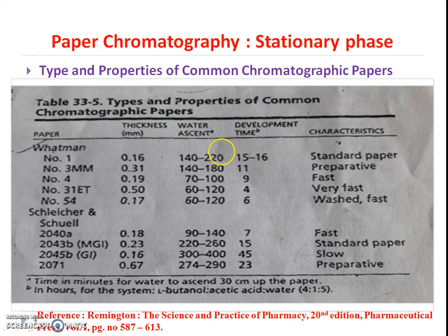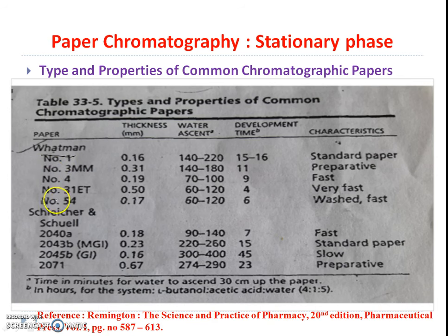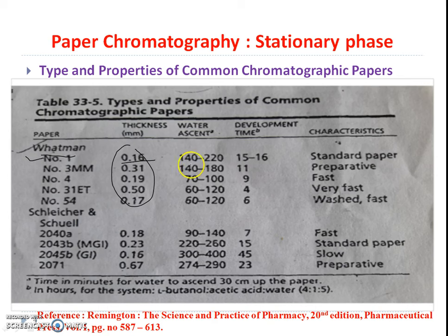There are different stationary phases used in paper chromatography. The chart shows different types and properties of common chromatographic papers. Whatman paper number 1, number 4, and number 54 are used at various thicknesses. Whatman filter paper number 1 is most commonly used, with a thickness of 0.16mm, water ascent of 140mm in 20 minutes, development time of 15–16 minutes, and is characterized as the standard paper.